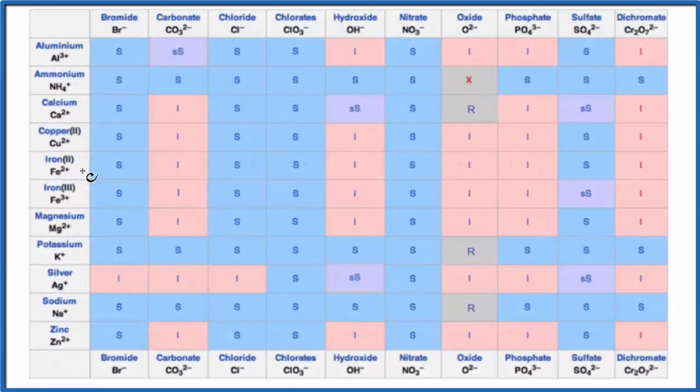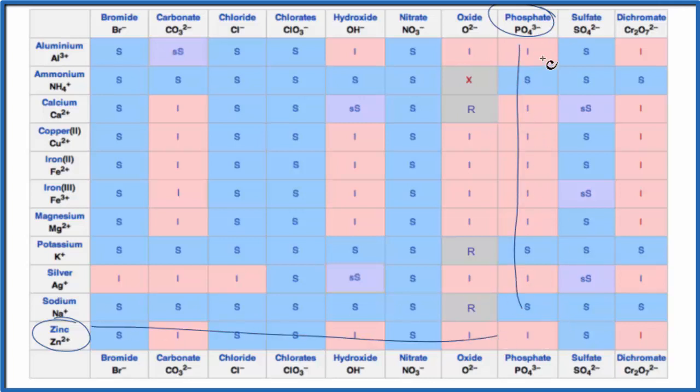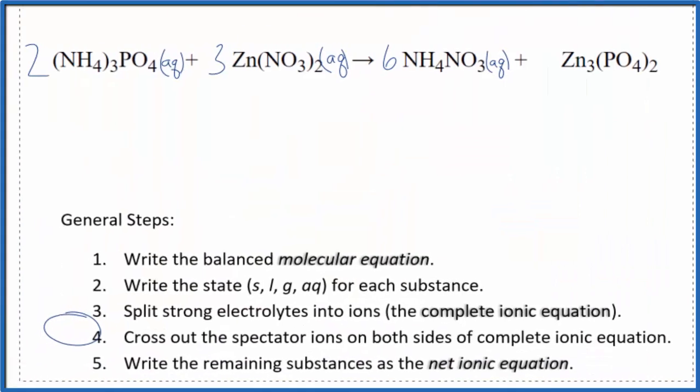So I'm looking for zinc, which is way down here, and then phosphate, which is over here. We got our phosphate, we come down and over. And you can see most of the phosphates are insoluble. And zinc phosphate, that I, that means it's insoluble. It's not going to dissolve when we put it in water.